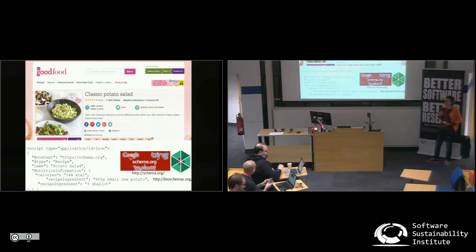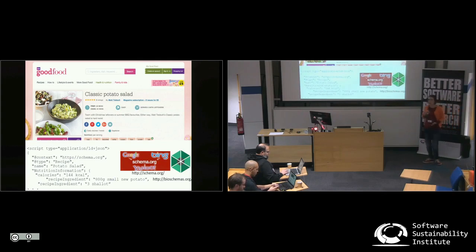For example, if you annotate your pages using schema.org schemas, Google will be able to extract that information, and then that information will be used by Google for some advanced search, so you would be able to get richer results from Google. Yahoo supports it, Bing supports it, and other search engines support schema.org.